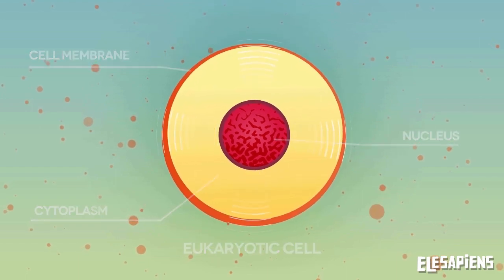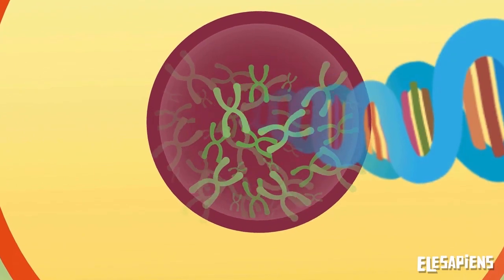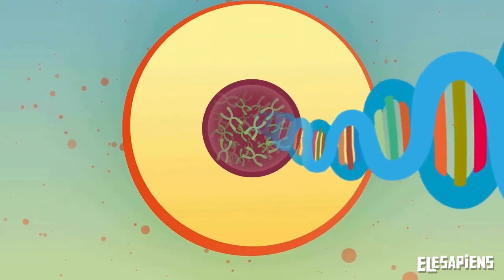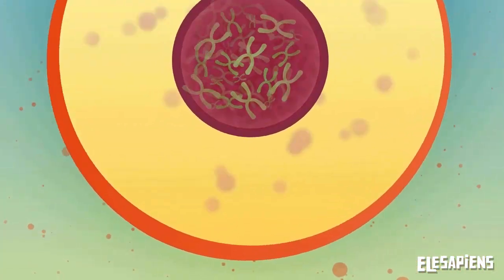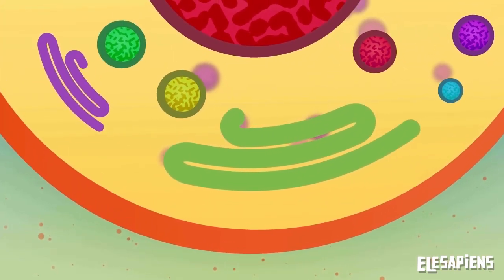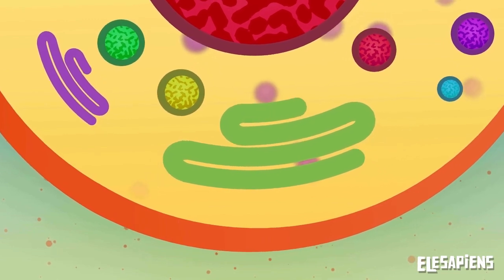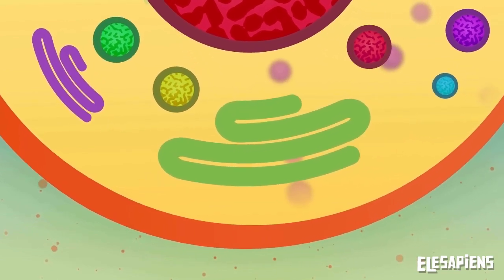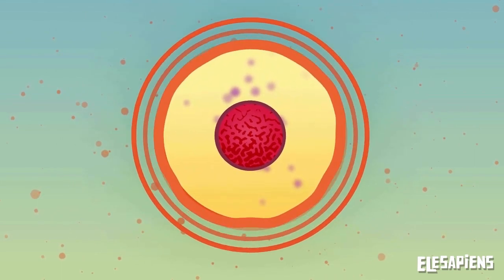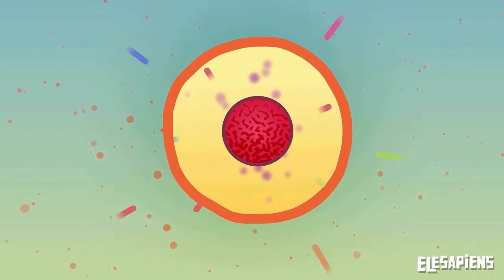The nucleus controls all activities in a cell and contains the genetic information that is passed from one cell to its offspring. The cytoplasm is around it — a substance containing organelles, which are like tiny organs in charge of breathing or feeding. The cell membrane is a flexible cover that protects the cell and regulates the entry and exit of substances.